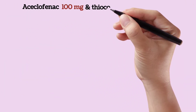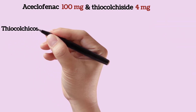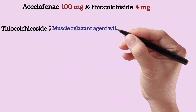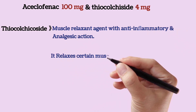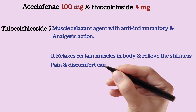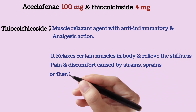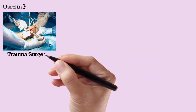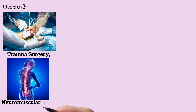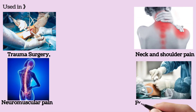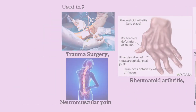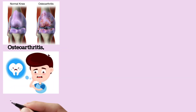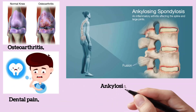Our next combination is aceclofenac and thiocolchicoside. In this combination, thiocolchicoside is a muscle relaxant agent with anti-inflammatory and analgesic action. It relaxes certain muscles in the body and relieves stiffness, pain, and discomfort caused by strains, sprains, or injury to muscles. It is mostly used in trauma surgery, neuromuscular pain, neck and shoulder pain, post-operative pain, rheumatoid arthritis, osteoarthritis, dental pain, and ankylosing spondylitis.